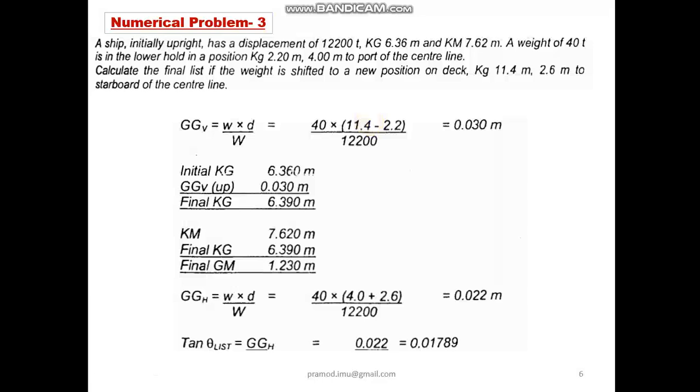The distance moved in the vertical plane is taken as 11 meters in the final position minus 2.2 meters, that is the initial position. So that will be the distance moved in the vertical plane, divided by capital W which is the ship's displacement. So GGv is 0.03 meters.